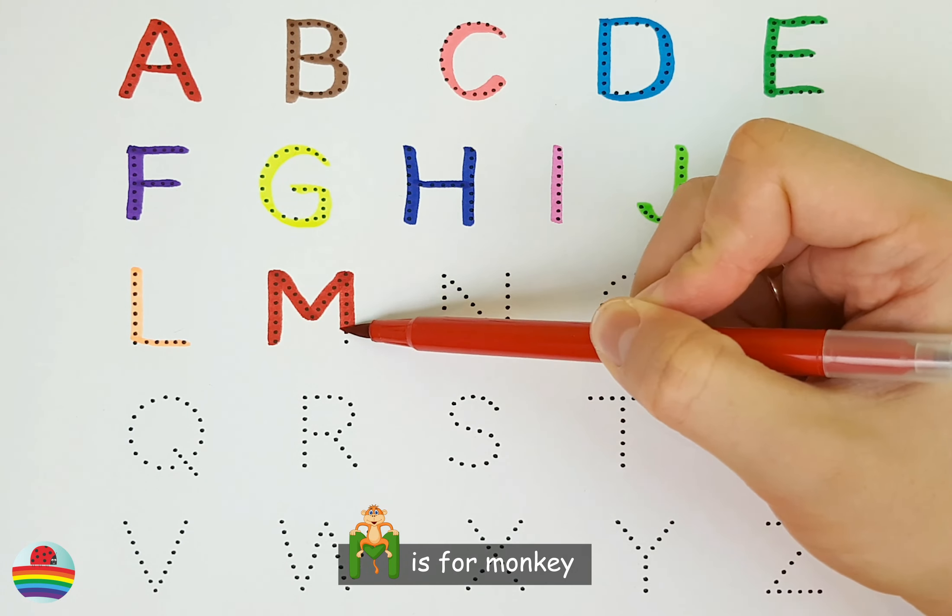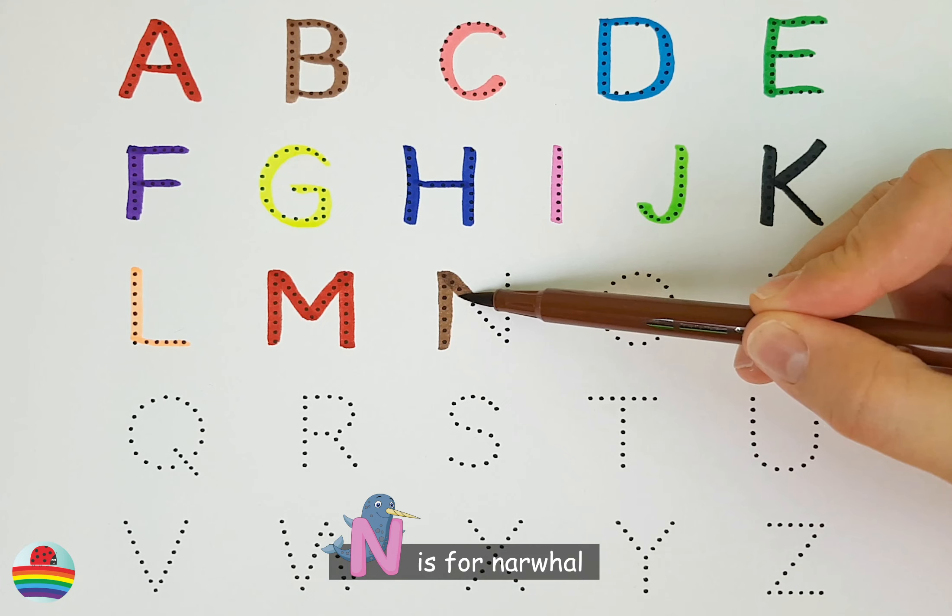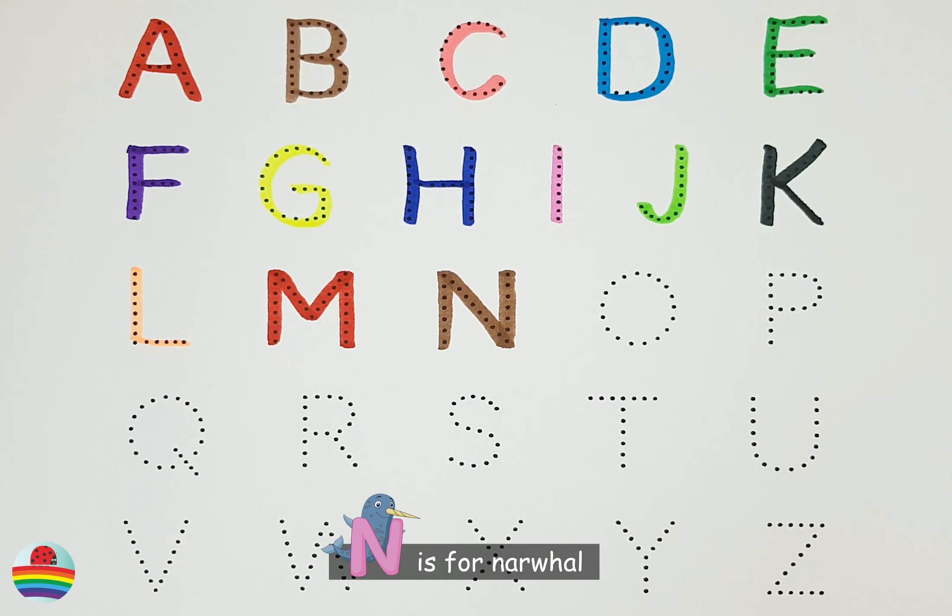M. M is for Monkey. N. N is for Narwhal. O. O is for Owl.